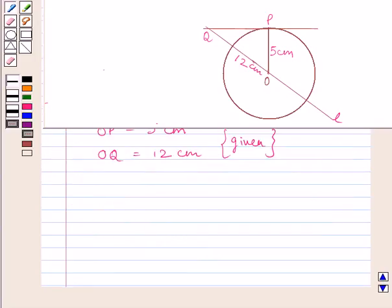Now, we will use the theorem which states that the tangent at any point of a circle is perpendicular to the radius through the point of contact. So we can say OP is perpendicular to PQ. Here OP is the radius, PQ is the tangent, and P is the point of contact.